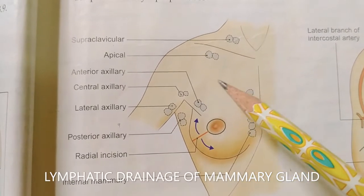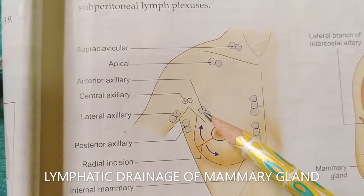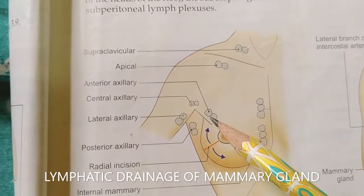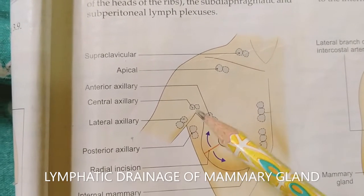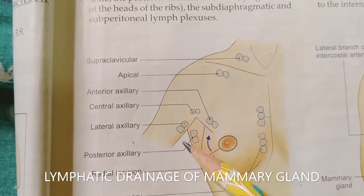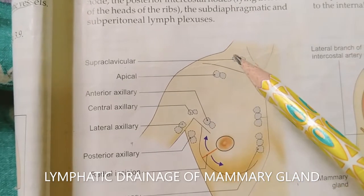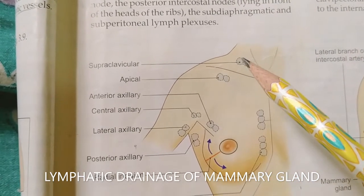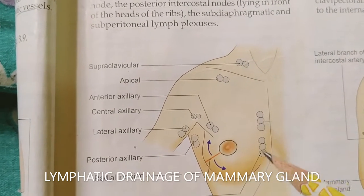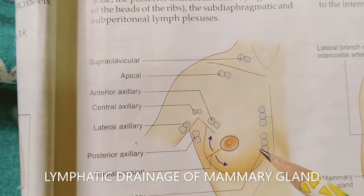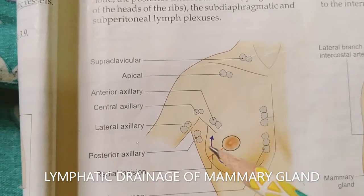This is the diagram of lymphatic drainage of the breast. These are the axillary lymph nodes with five groups: apical, anterior axillary, posterior axillary, central, and lateral group — which drain 75% of breast lymph. These are the supraclavicular nodes, internal mammary nodes which drain 20% of breast lymph.